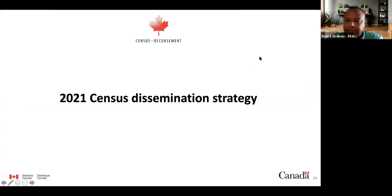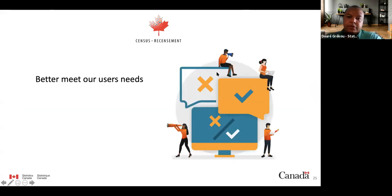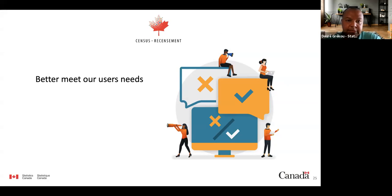The last part of the presentation is about the dissemination strategy. The goal is to better meet our users. Our engagement has been extensive with numerous audiences including federal, provincial, territorial, indigenous, and local governments; NGOs; associations; academia; business; and the general public. Our strategy will address what we've heard. We have heard three main themes: the impact of COVID on families and how Canada is changing, what are the challenges faced by certain groups, and calls for data on specific groups as well as lower levels of geography.